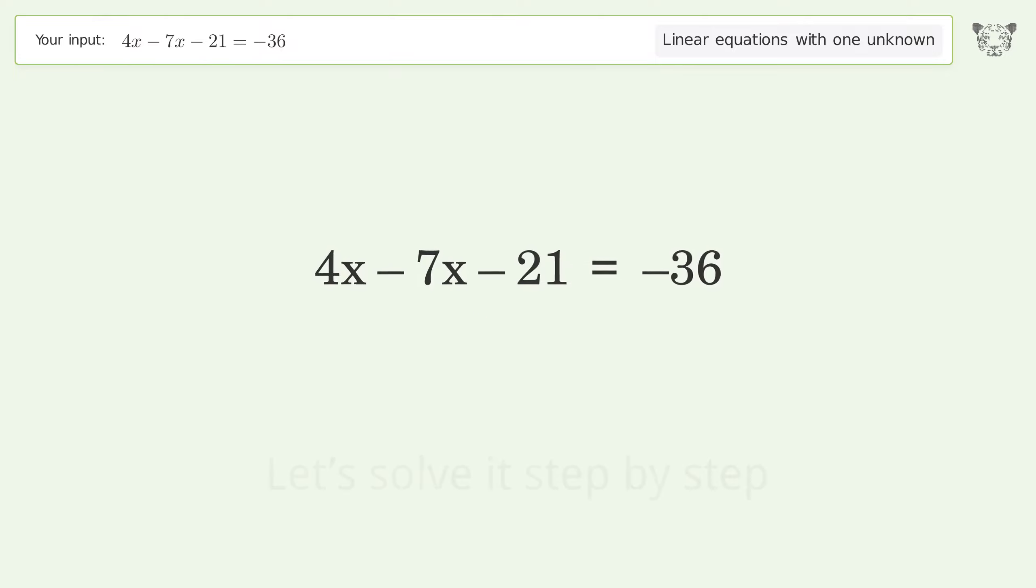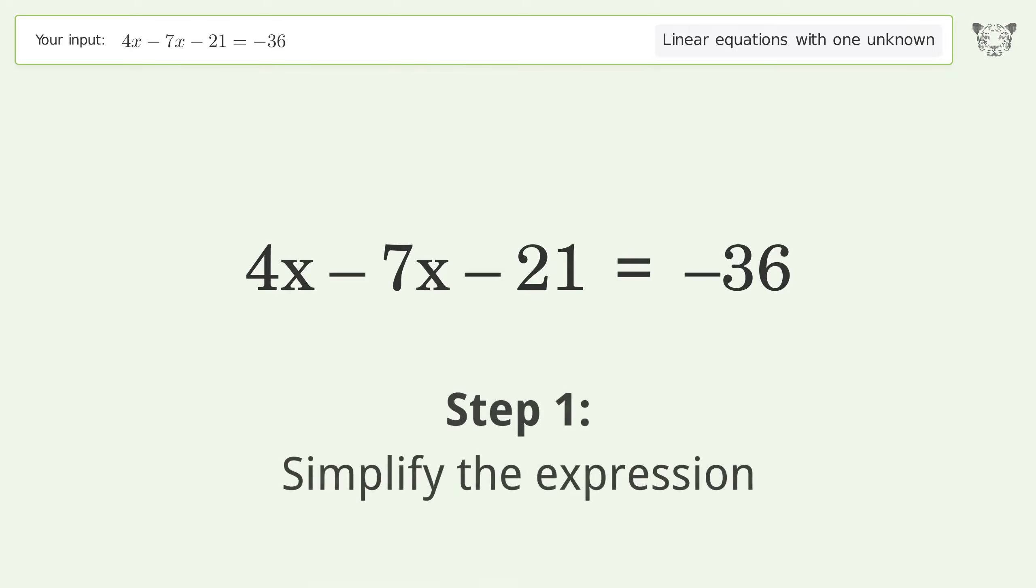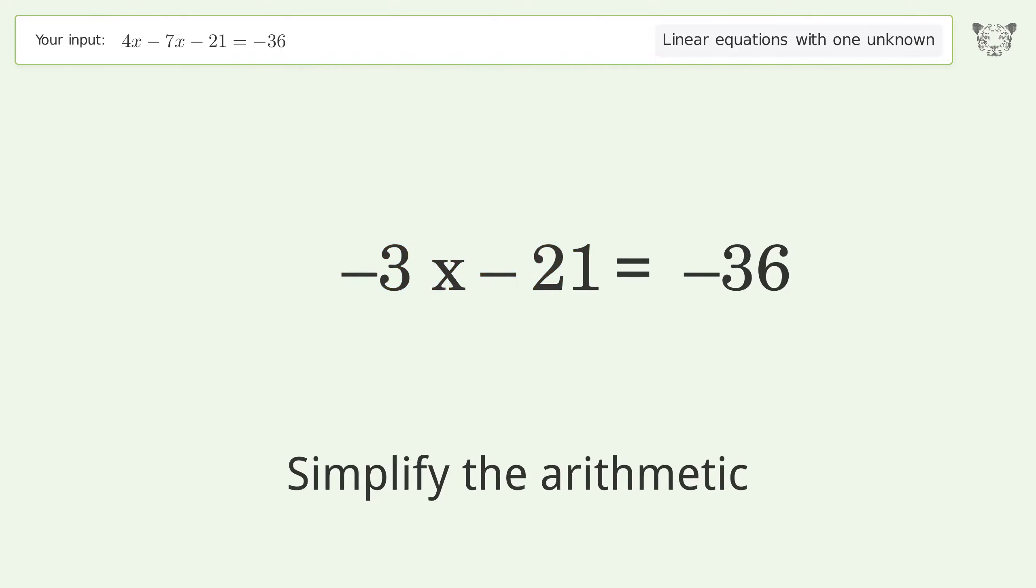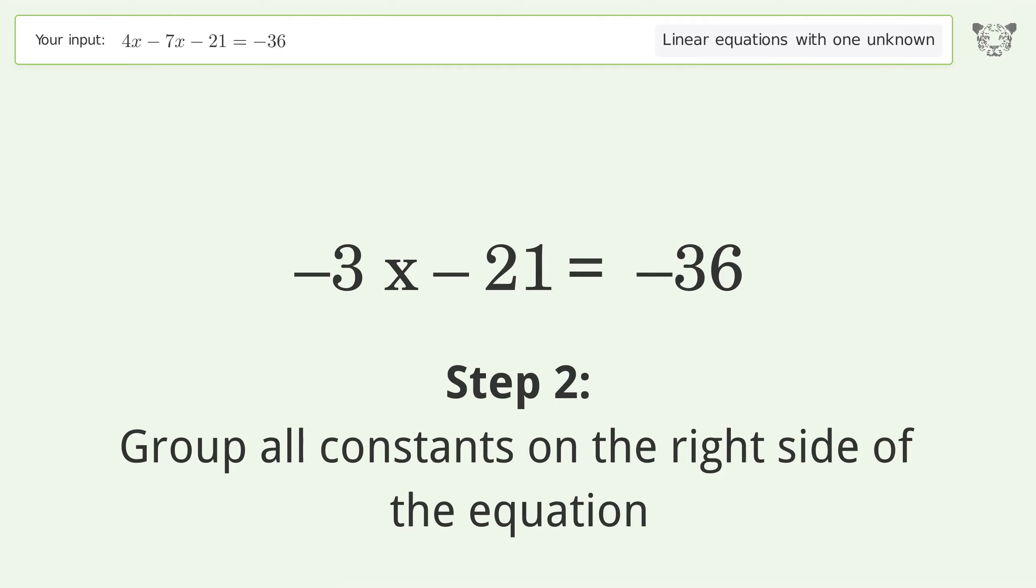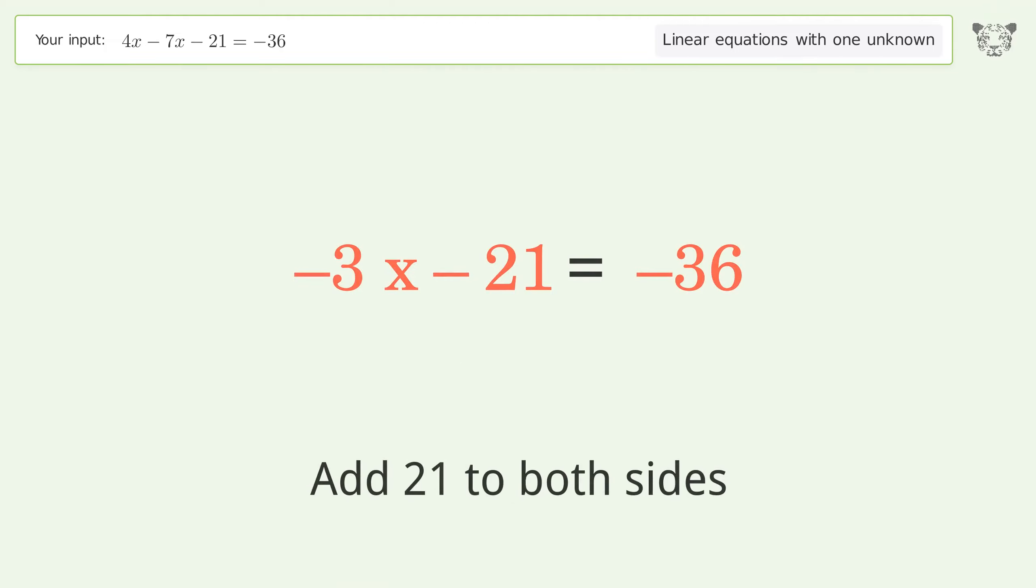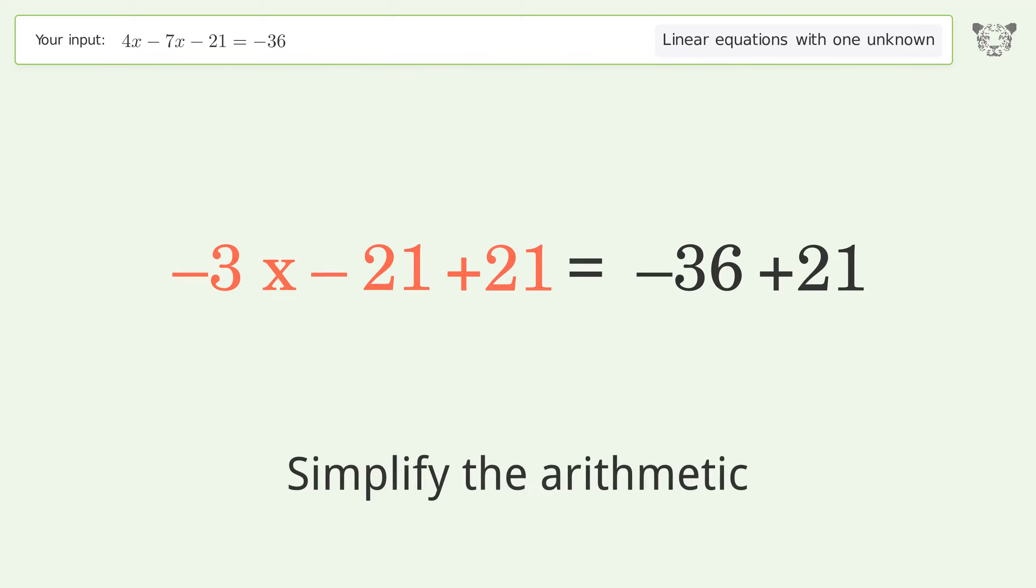Let's solve it step by step. Simplify the expression. Simplify the arithmetic. Group all constants on the right side of the equation. Add 21 to both sides and simplify the arithmetic.